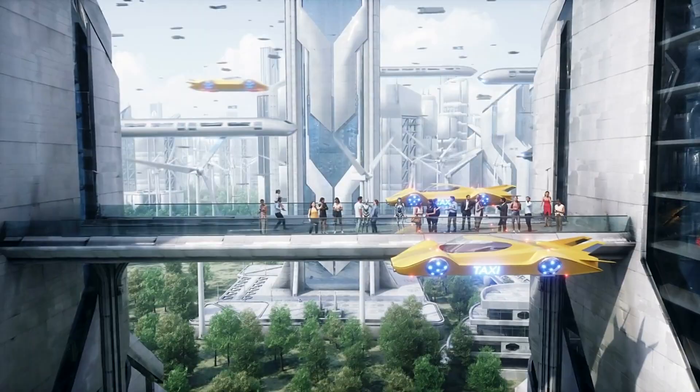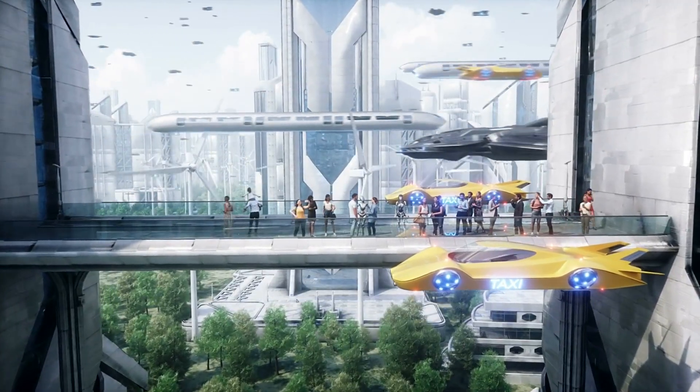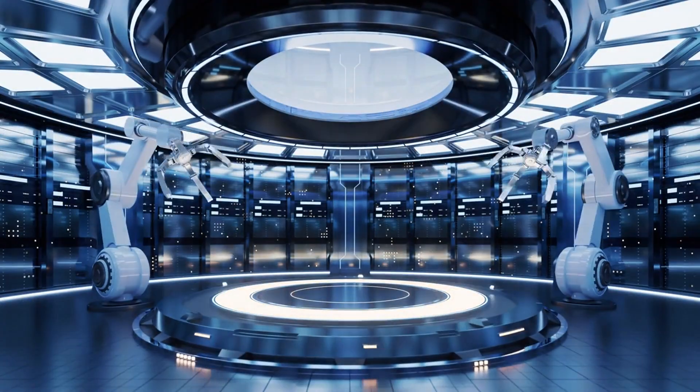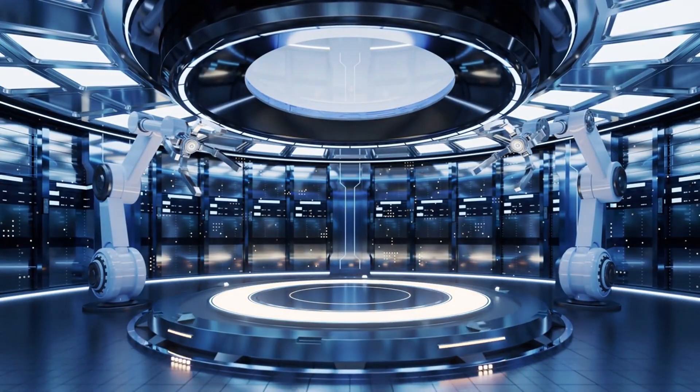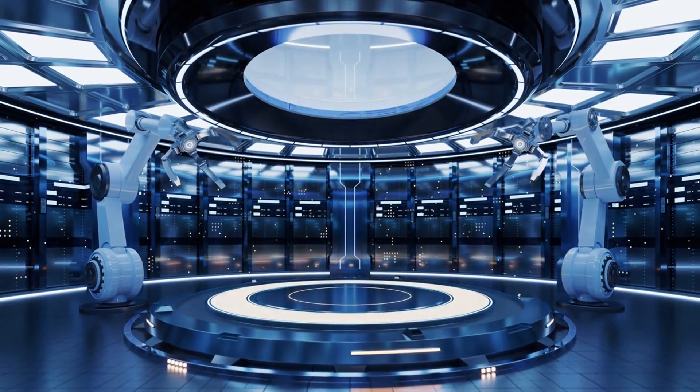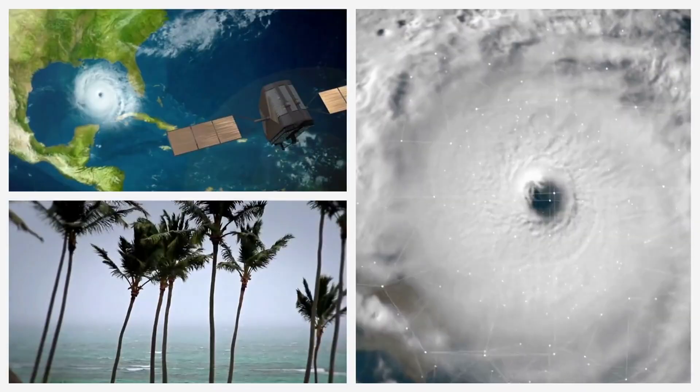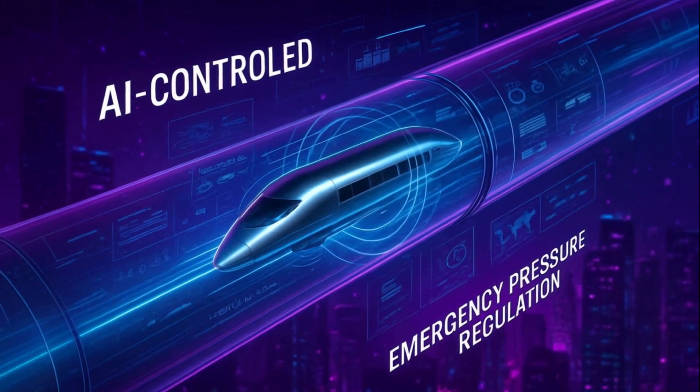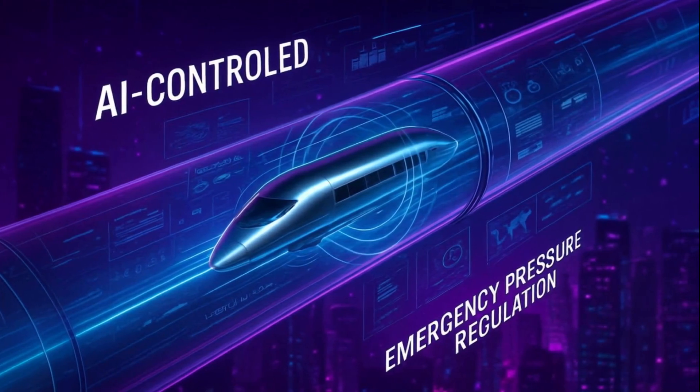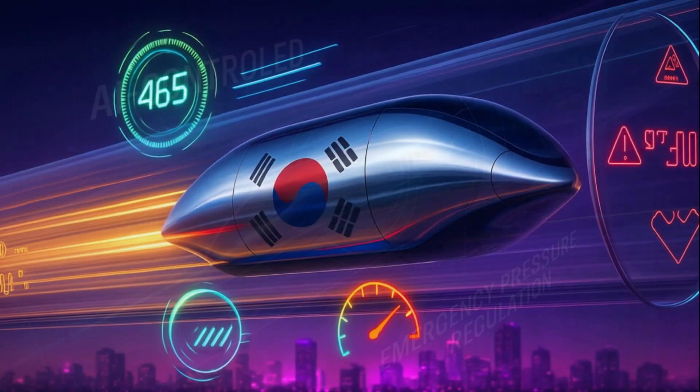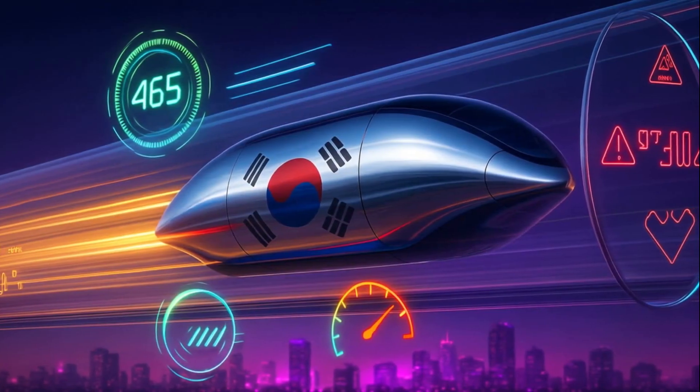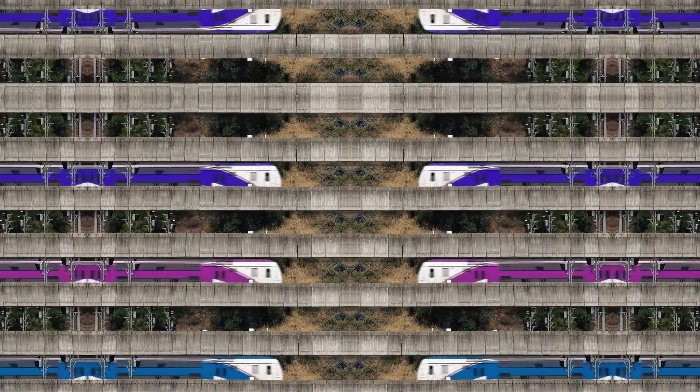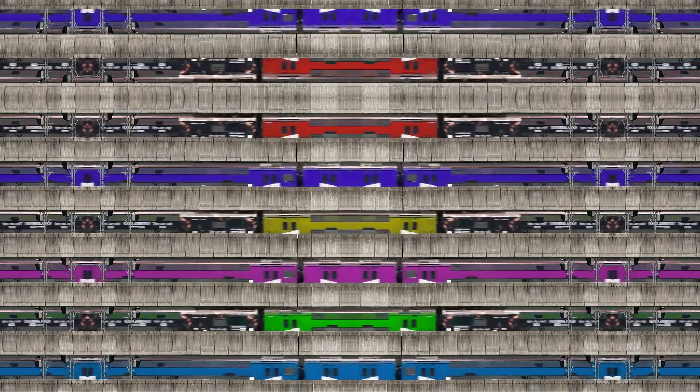But the big question is, which country will control the fastest, cleanest transport system ever invented? And how safe is this next-generation engineering marvel? Experts are split. On one hand, magnetic levitation eliminates wheel track friction, reducing mechanical failure, while the vacuum environment removes weather-related risks like turbulence, ice, or debris. These trains are AI controlled, with real-time monitoring systems and emergency pressure regulation built into the tubes. Countries like Japan and China, who already tested these systems at near supersonic speeds, claim zero accident potential due to the system's sealed automated nature.